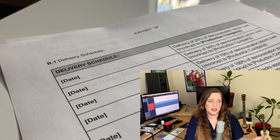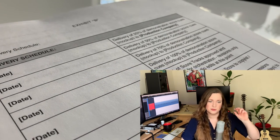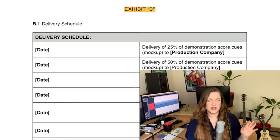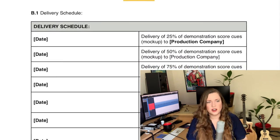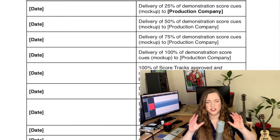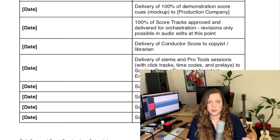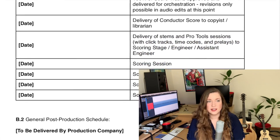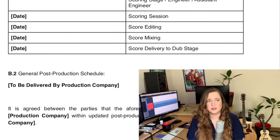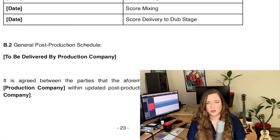Then there's usually Exhibit B, which outlines the scheduling — what kinds of production milestones are expected. This is usually fairly loose; these are not usually hard deadlines but rather a general outline of what they expect in terms of delivery. The really hard deadlines are the recording sessions and the dub stage delivery, because those don't move, and if you don't deliver those files on time there are actual damages.